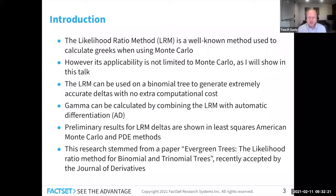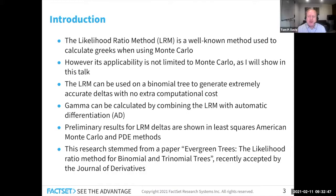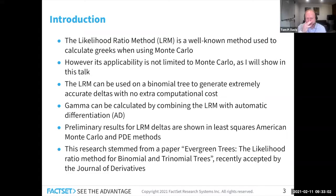As I said, it's a well-known method that started in Monte Carlo — you can read about it in Glasserman's book or many papers. But we can also apply it to binomial trees, trinomial trees, partial differential equations, and Monte Carlo in a different sense than it's been applied to in the past. One of the things we gain from this is that on binomial and trinomial trees, we can calculate gamma. It's well-known that due to interactions with the payoff and the node structure of the trees, gamma cannot be calculated on a binomial tree, including through techniques like automatic differentiation.